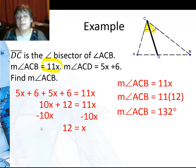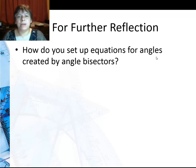So in this example, I did the sum of the two pieces equals the whole. Many times in these problems, you're going to have two different expressions and you're going to set them equal to each other. So for further reflection, how can you set up equations for angles created by angle bisectors?